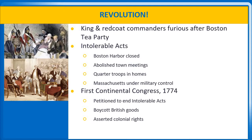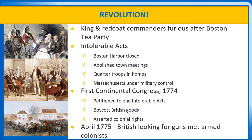Before the Continental Congress reconvened, fighting had begun in April 1775. The British commander in Boston, General Thomas Gage, sent 1,000 troops to seize guns and ammunition stored at Concord, Massachusetts. Armed colonists, who called themselves Minutemen, blocked the way and came under British fire at Lexington and Concord. Eight were shot dead. The British found and destroyed the weapons, but their march back to Boston was horrific — Minutemen hid behind rocks and trees and sniped at them all the way home. By the time the English army had limped back to the city, they had lost 300 men.